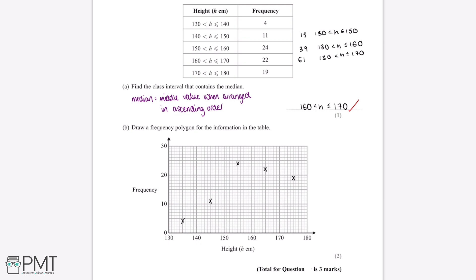The final thing we'll need to do to complete this frequency polygon is join up these plotted points using a ruler. This is what our completed frequency polygon should look like. This question is worth two marks, and we'll get both marks for correctly completing the frequency polygon.